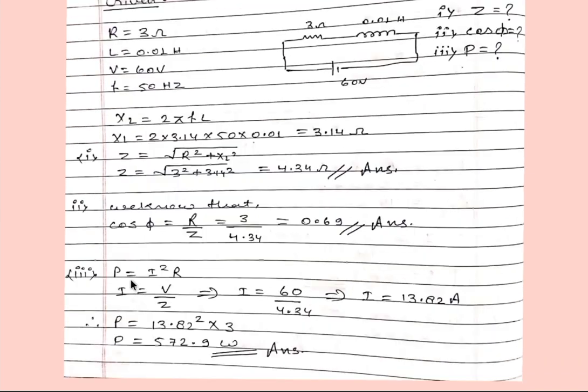Now power absorbed P equals I squared R, but we don't have I so we will calculate first I. I will be V divided by Z, then I equals 60 divided by 4.34, I equals 13.82 ampere. We will put this I and R value in this equation, we will get P equals 13.82 squared into 3. So the answer is 572.9 watt, it will be our answer.